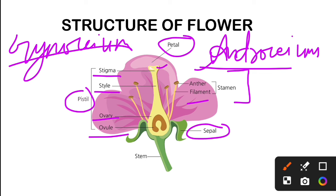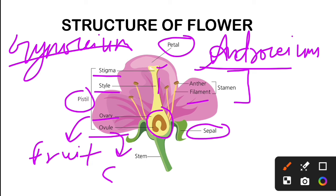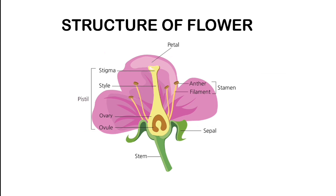This is our stigma, this is the style, this is the ovary, and inside the ovary are the ovules. When the flower is mature, when the ovary is mature and converted, this is a commonly asked question: ovaries mature into fruits and ovules into seeds. This is a one-mark question. The flower structure is clear.